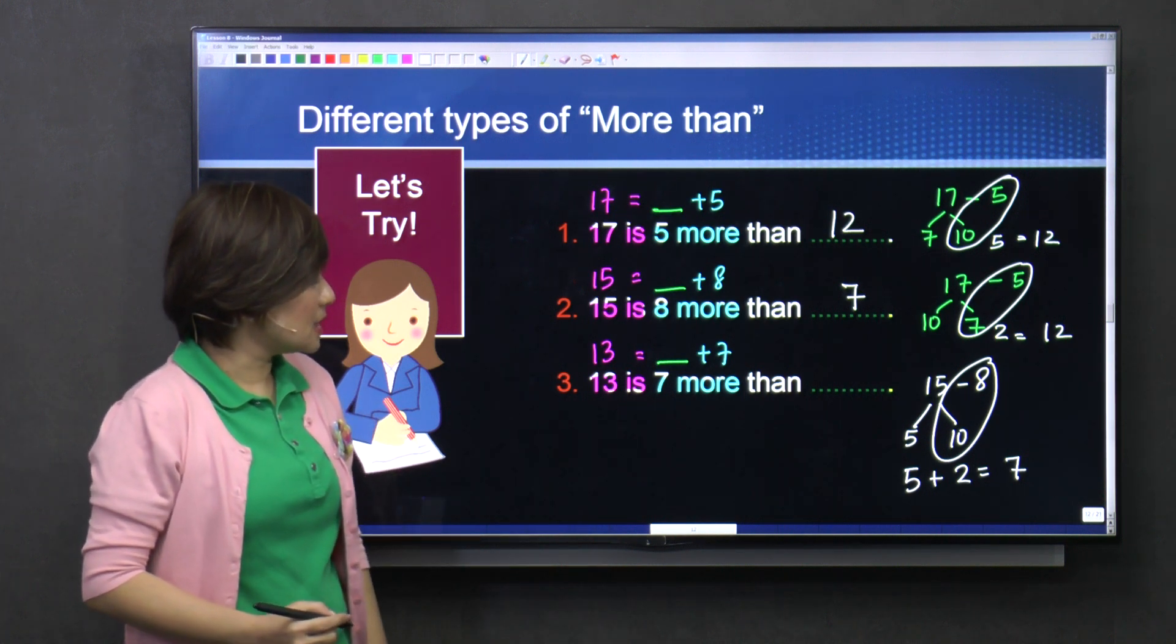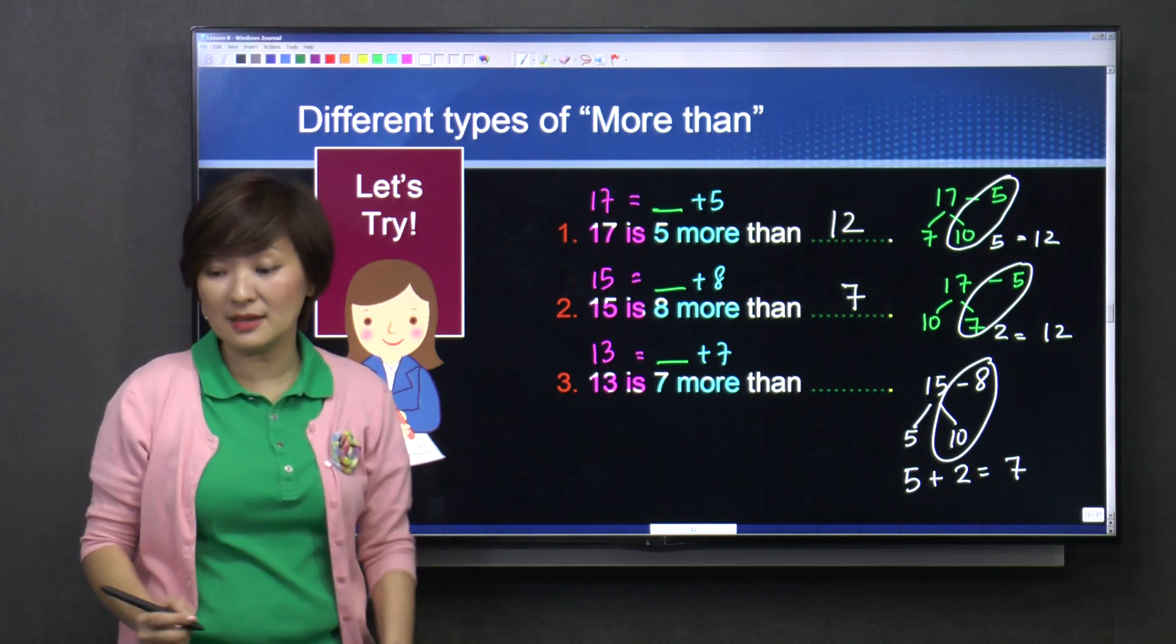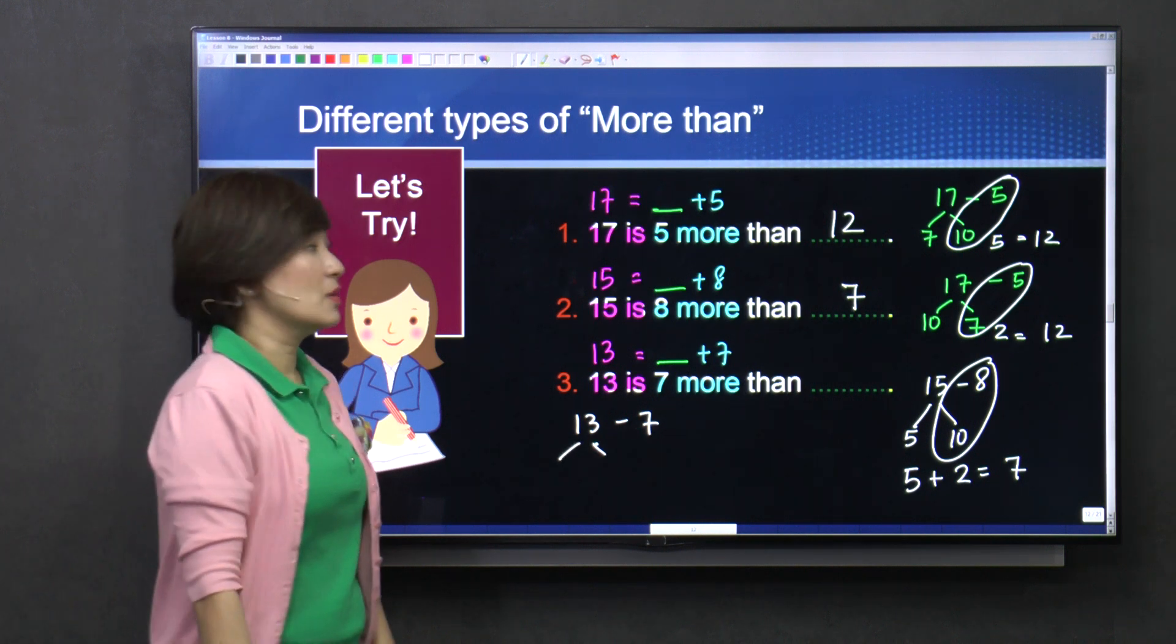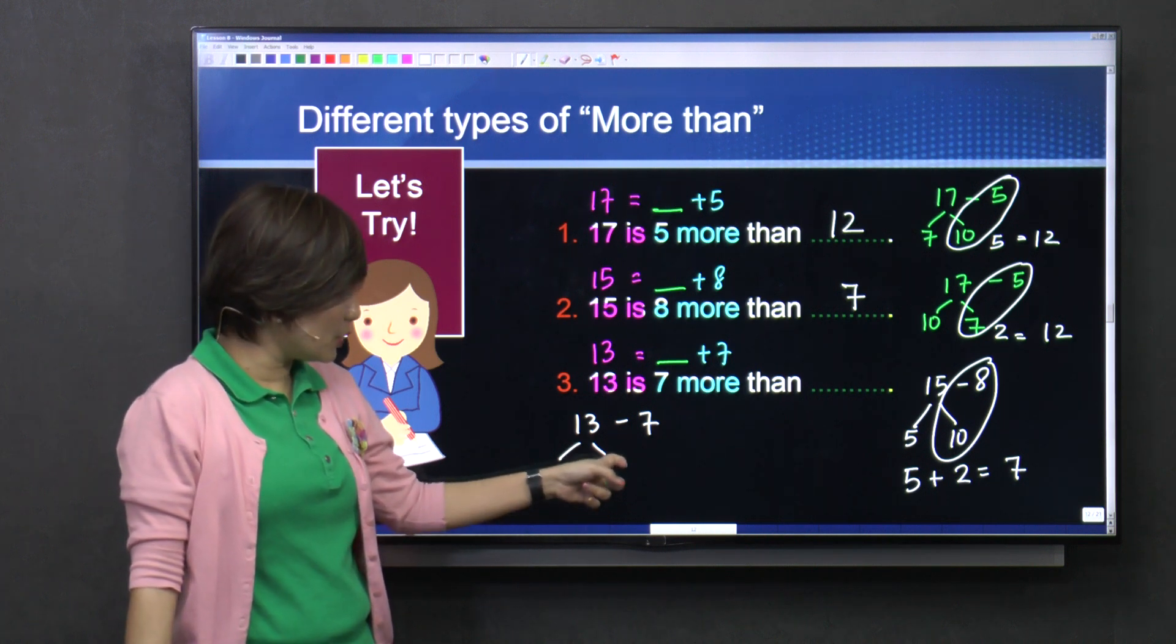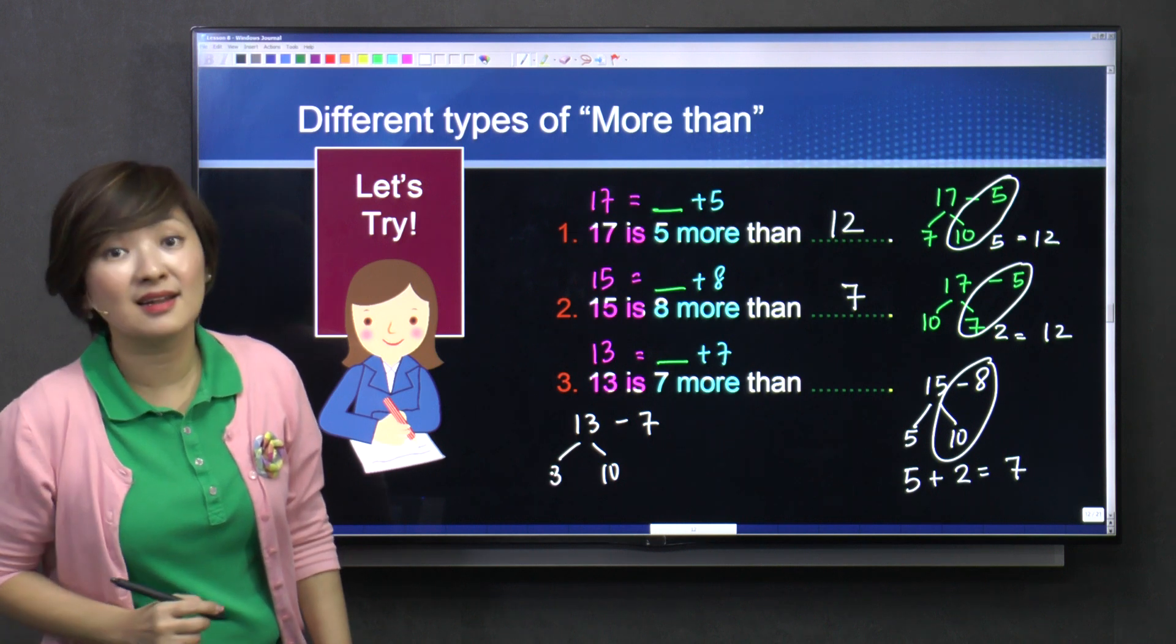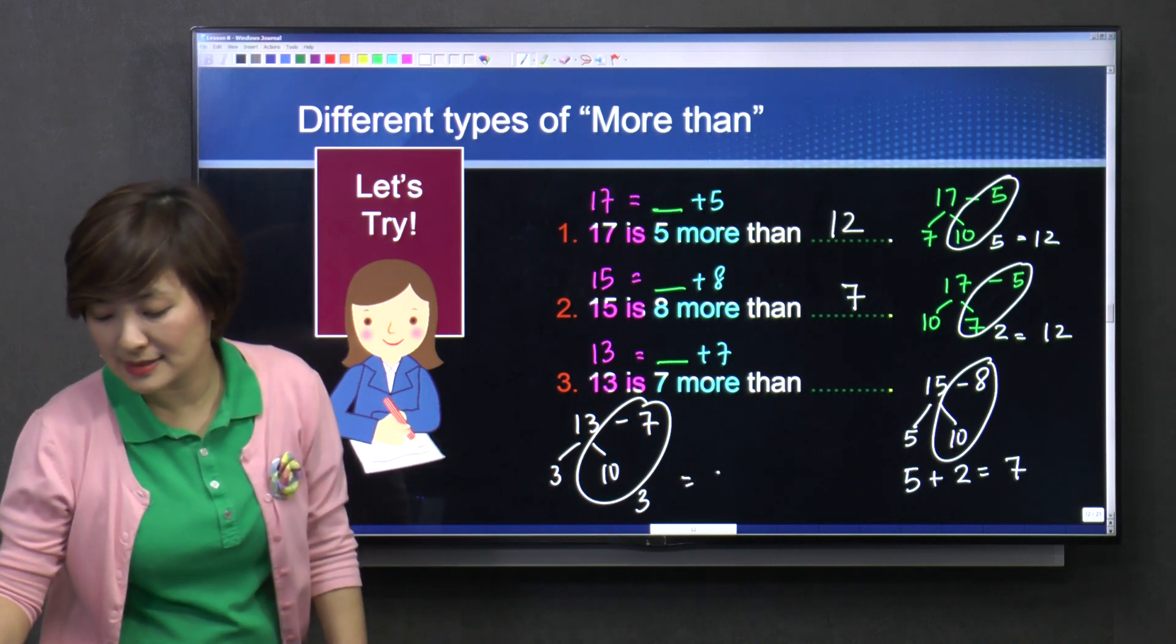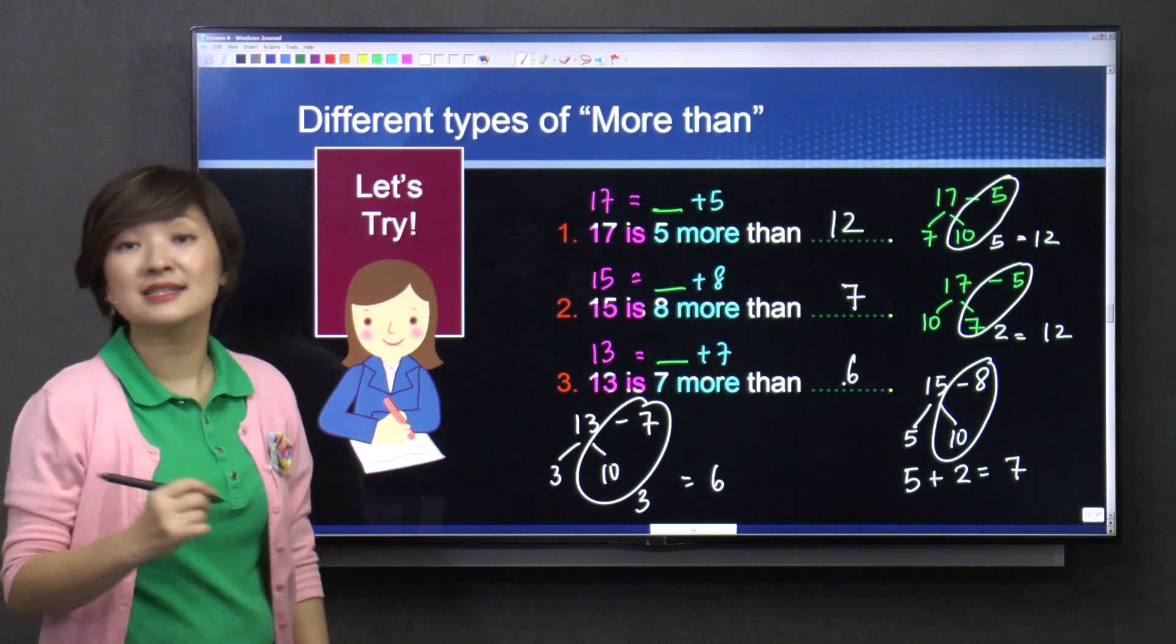Okay? Thirteen, thirteen is equals to what plus seven? Can you, do you know it mentally? Thirteen minus seven, what will you put here? What number will you put here? Will you put three or will you put ten? I will put ten, and this is three. Okay, ten minus seven gives me three, three plus three gives me six. So thirteen is seven more than six.